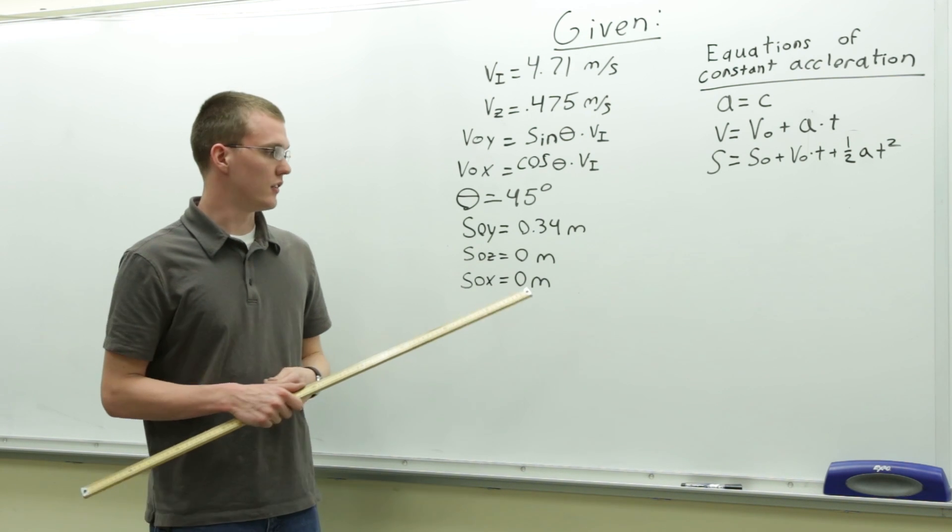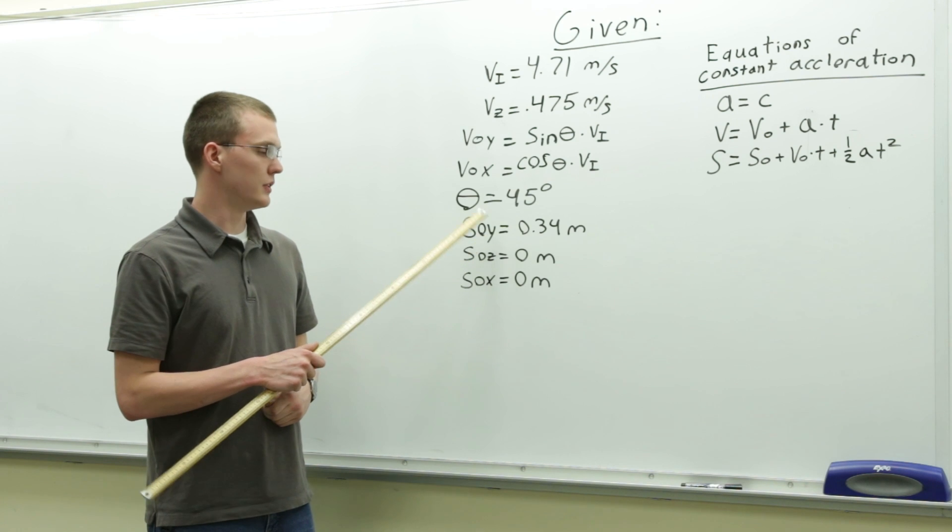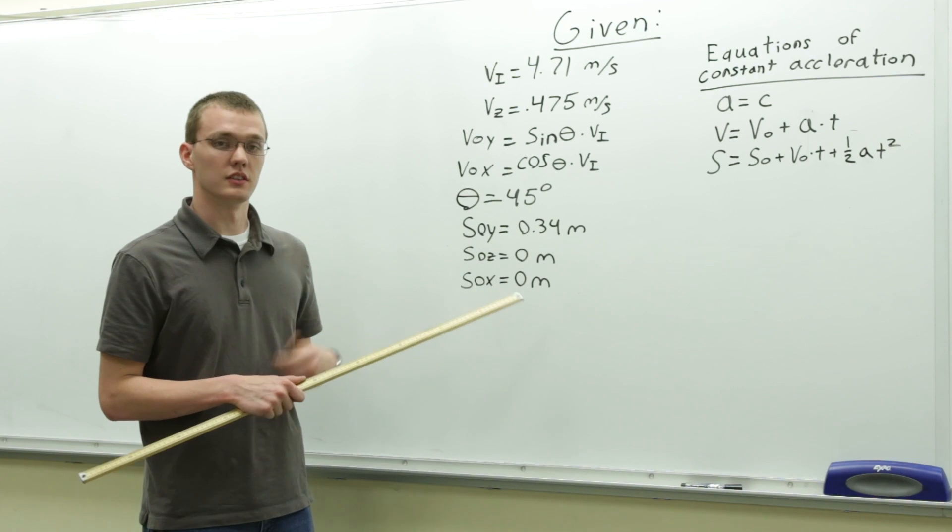Then, also, to find your position, you have to take into account initially where the ball starts. So the initial position of the ball in the y direction is 0.34 meters, and in the z and x direction, 0 meters.